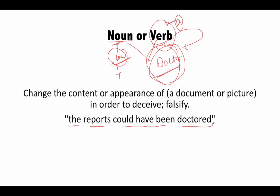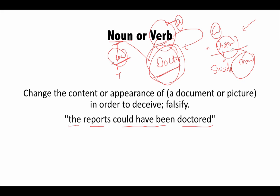The reports could have been doctored. What does it mean? Let's say some person commits suicide and his body goes to a doctor for post mortem. The doctor finds it was a suicide, but there is pressure from authorities to prove it was a murder. So the doctor doctors the report — he basically falsified the report, deceived others by changing the content or appearance of the report. So when we change the content or appearance of a document, picture, or audio/video tape in order to deceive someone, that is called doctoring something — changing, amending or altering something in a negative way.